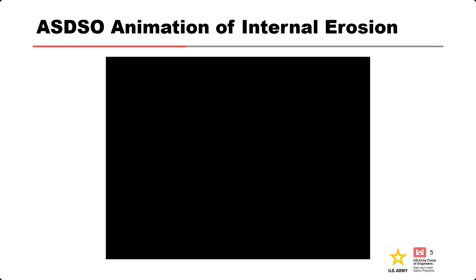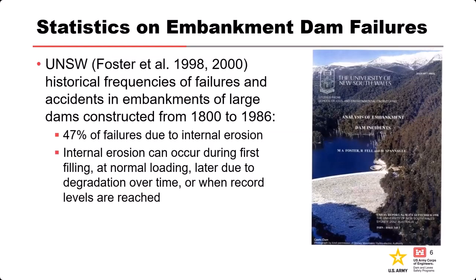Some statistics on embankment failures: Mark Foster at the University of New South Wales, Australia, examined statistics of large embankment dam failures constructed between 1800 and 1986. He found that about 50% of all dam incidents are related to internal erosion — it's the most common cause of failure. Overtopping accounts for about 36% and spillway gate failures about 12%. Roughly 45% is internal erosion, almost another half is overtopping, and about 10% is slope instability due to seismic issues.